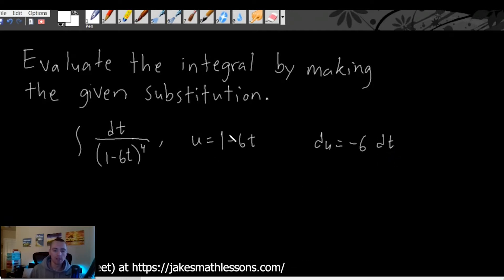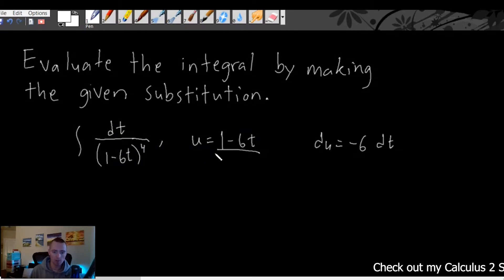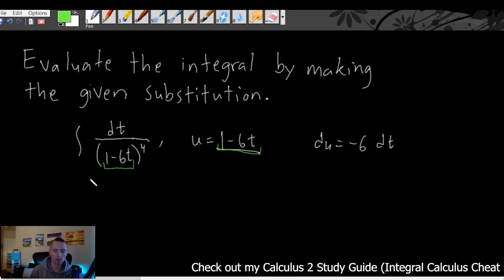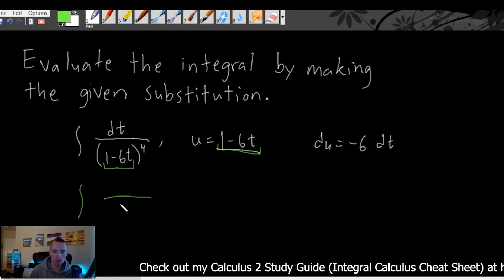So where this is going to come into play is now what we want to do is we're going to rewrite our integral in terms of this u and du instead of having it in terms of t and dt. So to do that what you want to do is first start by going to your integral and replacing whatever you've determined that your u is going to be with u. In this case you can see that we have 1 minus 6t right here which is exactly what our u is. So what we're going to do is we're going to go to our integral and we're going to replace what's in the parentheses here with u.